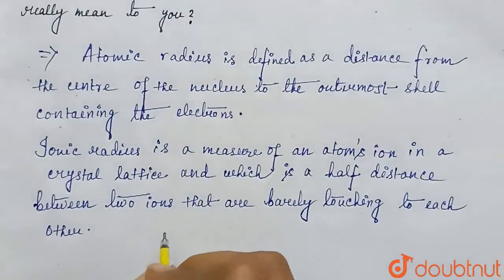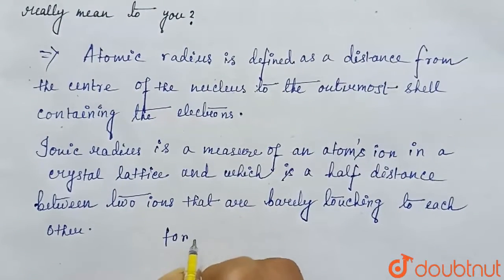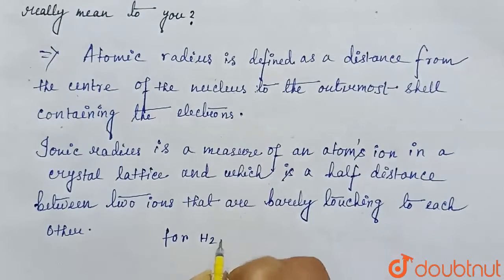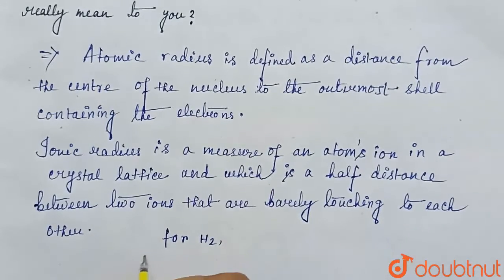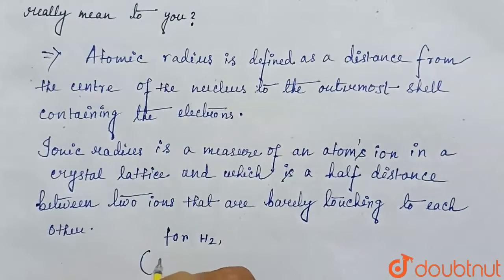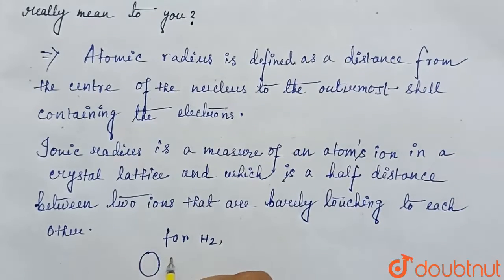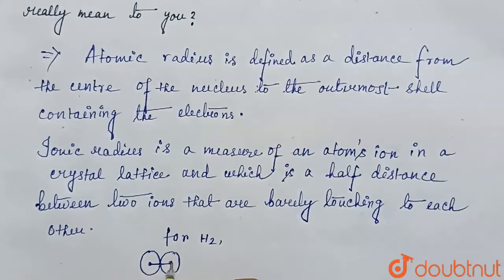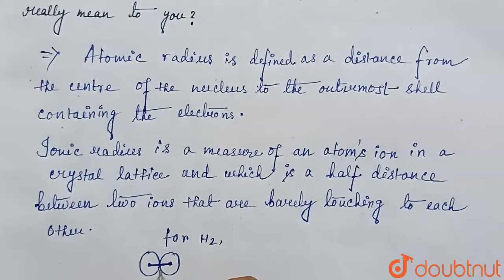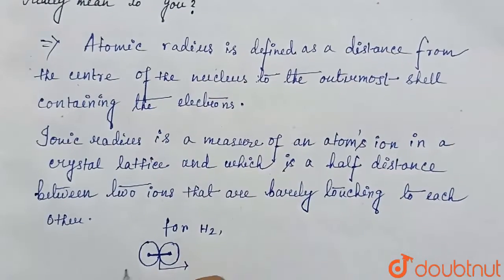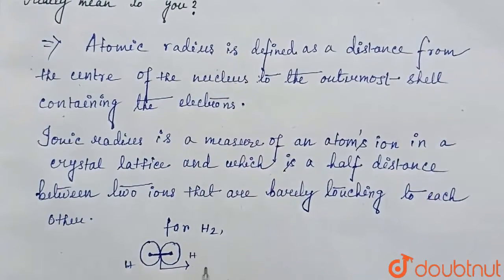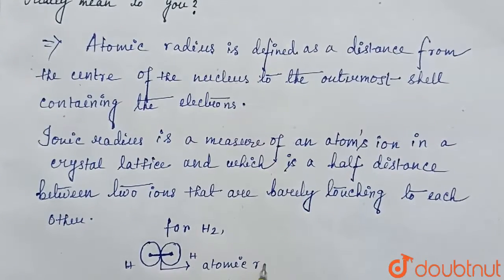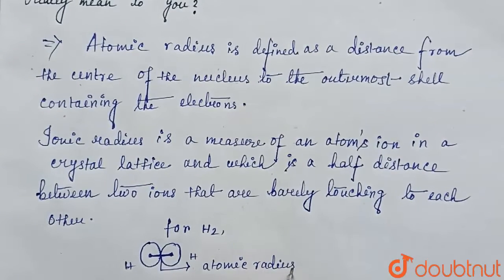So suppose for the H2 molecule, how we can find the atomic radius? This is one hydrogen atom, and this is another hydrogen atom. So these are the centers of these two hydrogen atoms. This distance — it is called the atomic radius of hydrogen. This is atomic radius.